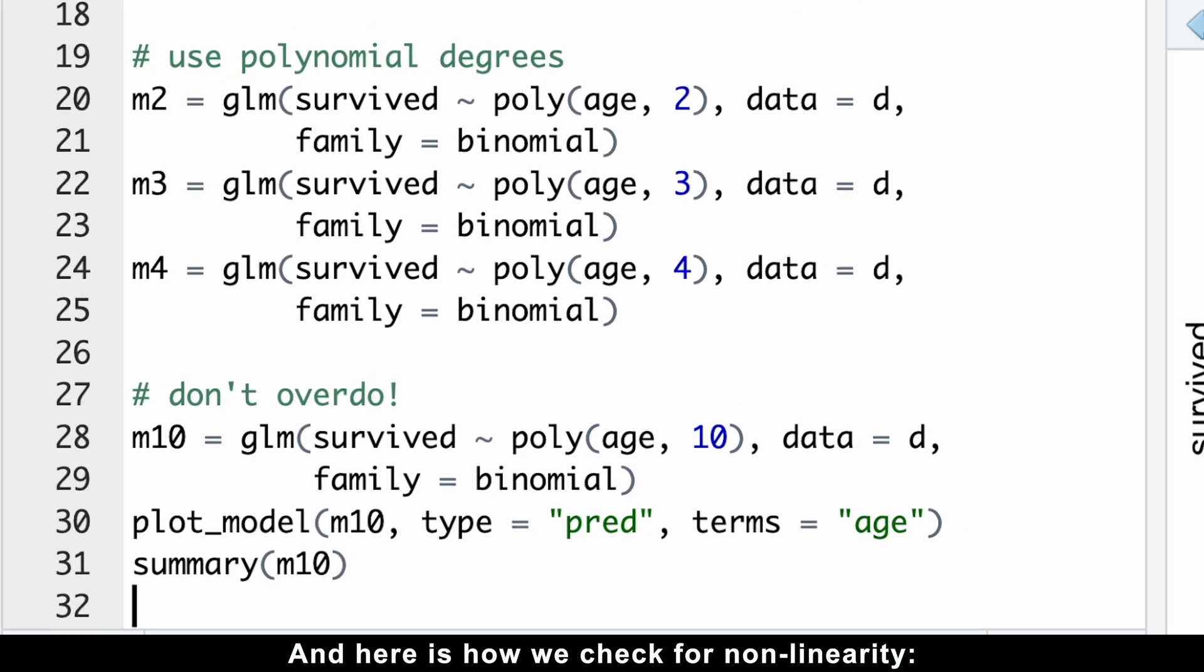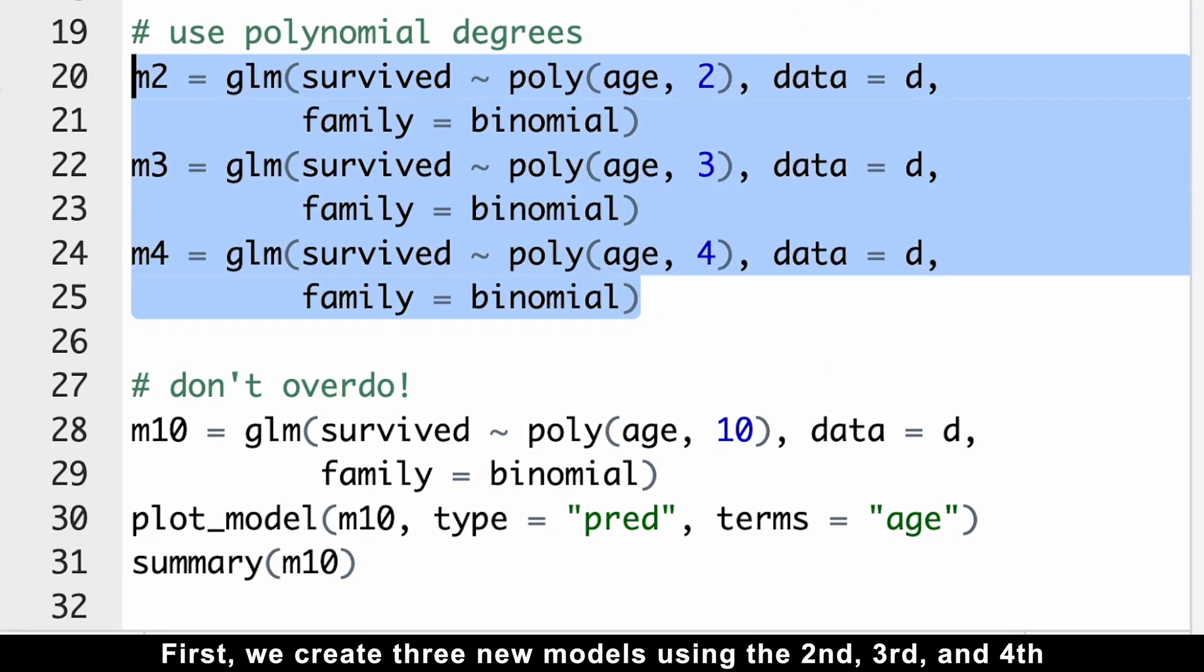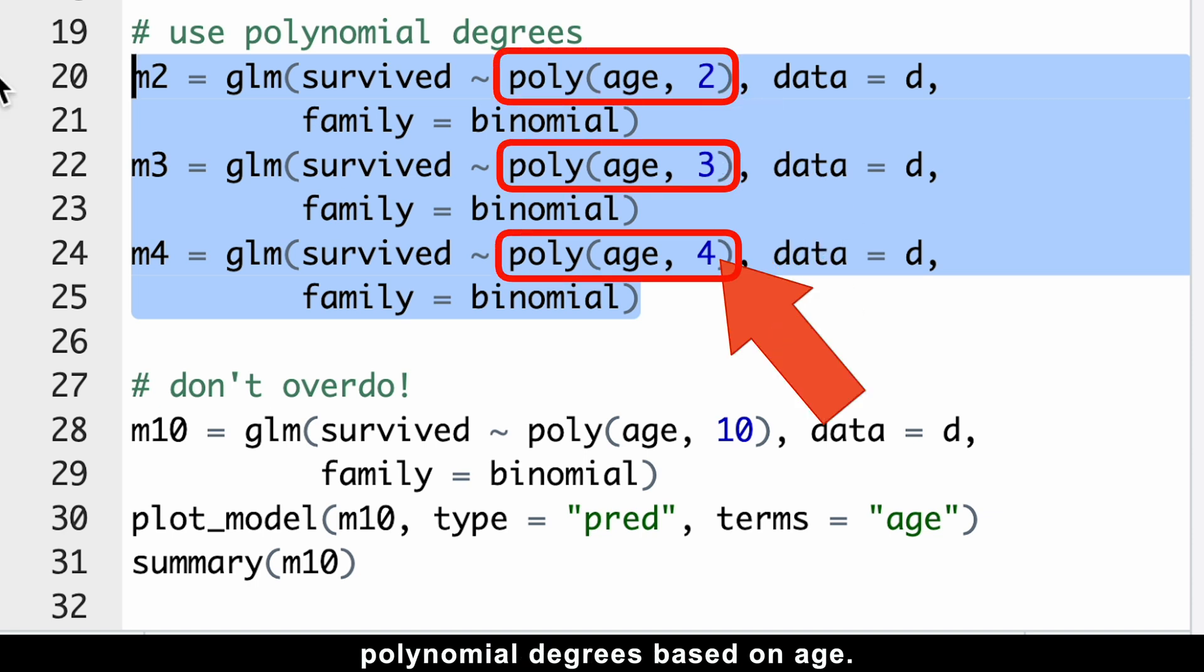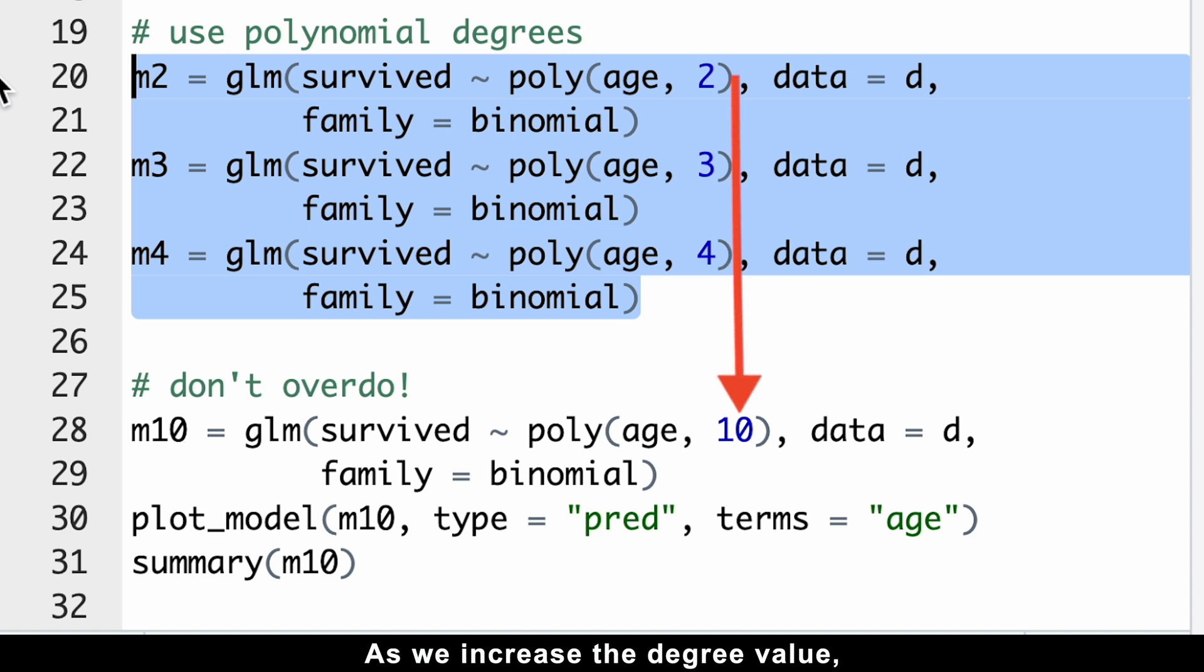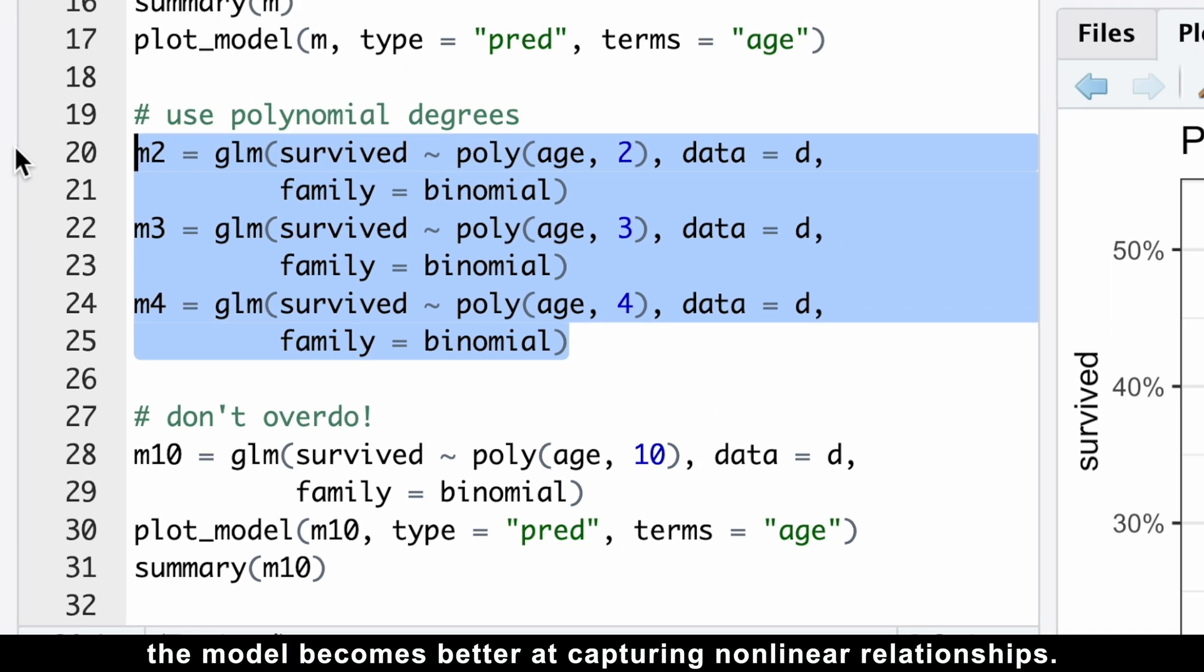And here is how we check for nonlinearity. First, we create three new models using the second, third, and fourth polynomial degrees based on age. As we increase the degree value, the model becomes better at capturing nonlinear relationships.